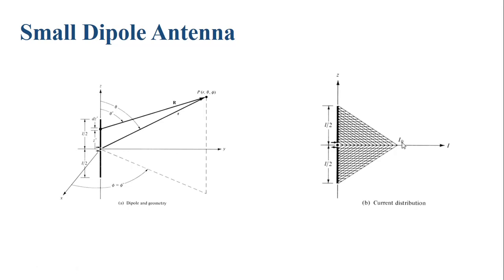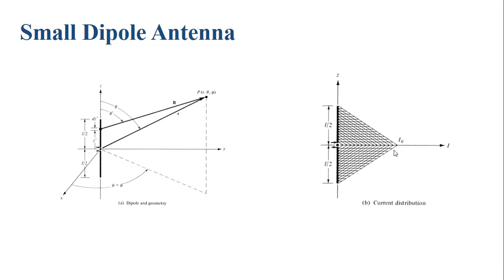As the length of the dipole antenna increases — for example, if it equals lambda/2 — the variation will not be triangular but a perfect sinusoidal waveform, satisfying the boundary condition: zero, rising to maxima, back to zero, and repeating. In the case of the small dipole antenna, since it is very short, any sinusoidal distribution over the short distance can be approximated as a triangular distribution, giving an average current value of i₀/2.